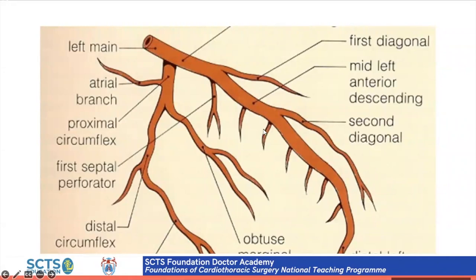The LAD supplies the anterior two-thirds of the septum and can be divided into proximal, mid, and distal sections. The proximal LAD runs from the bifurcation of the left main to the first septal branch; the mid LAD from the first septal to the second diagonal; and beyond that is the distal LAD.